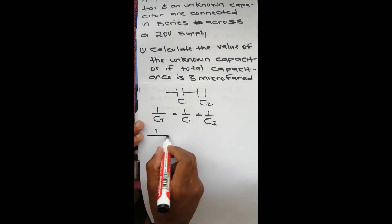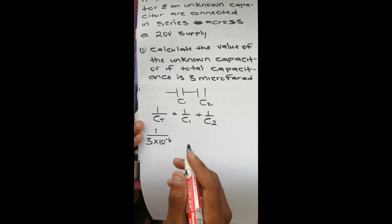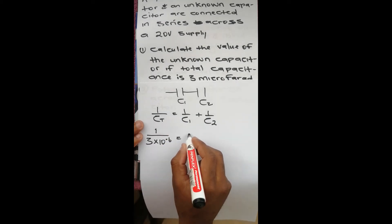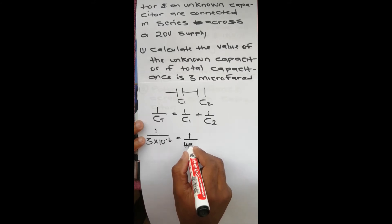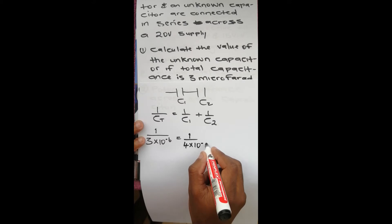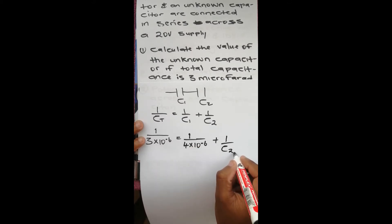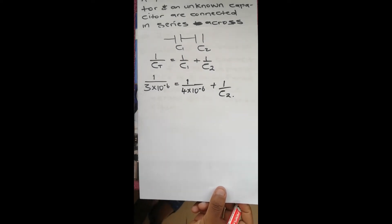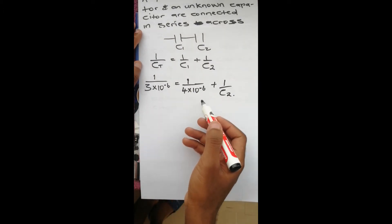So we have: one over three times ten to the power negative six equals one over four times ten to the power negative six, plus one over C2, where C1 is four microfarad. From there we make C2 the subject of the formula.